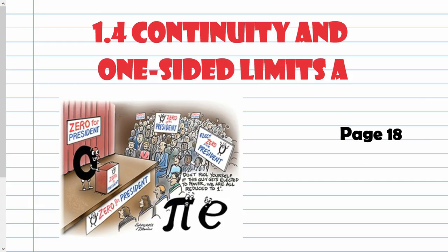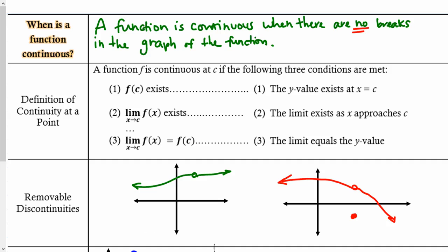Section 1.4: Continuity and One-Sided Limits. In this section we'll learn to determine whether or not a function is continuous. A function is continuous when there are no breaks in the graph. An easier way to describe that: if I were to draw a graph and never had to lift my pencil to draw it, then it is continuous — no breaks, no gaps, no holes, no missing pieces.